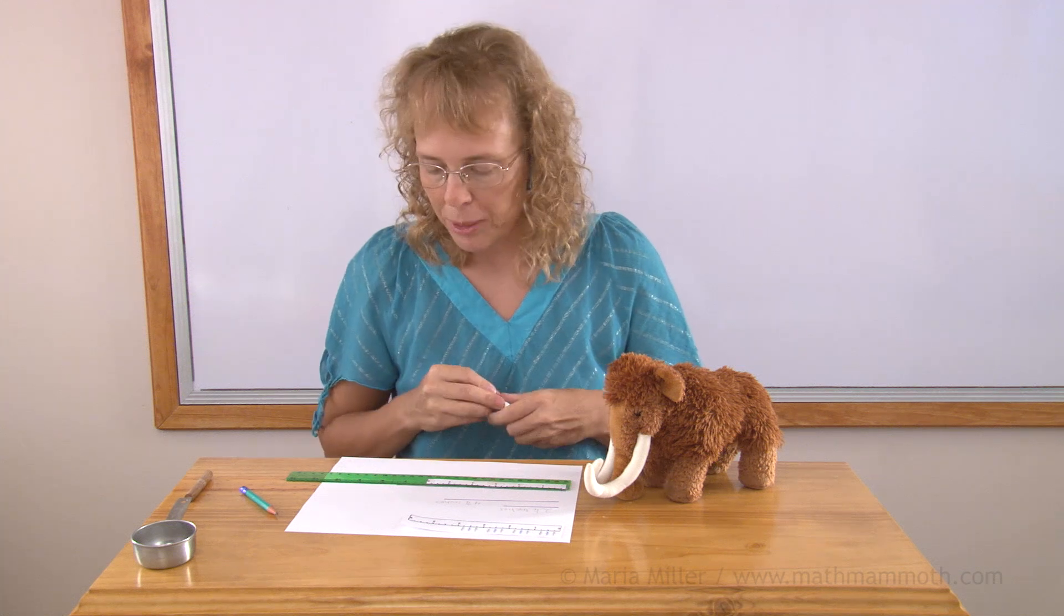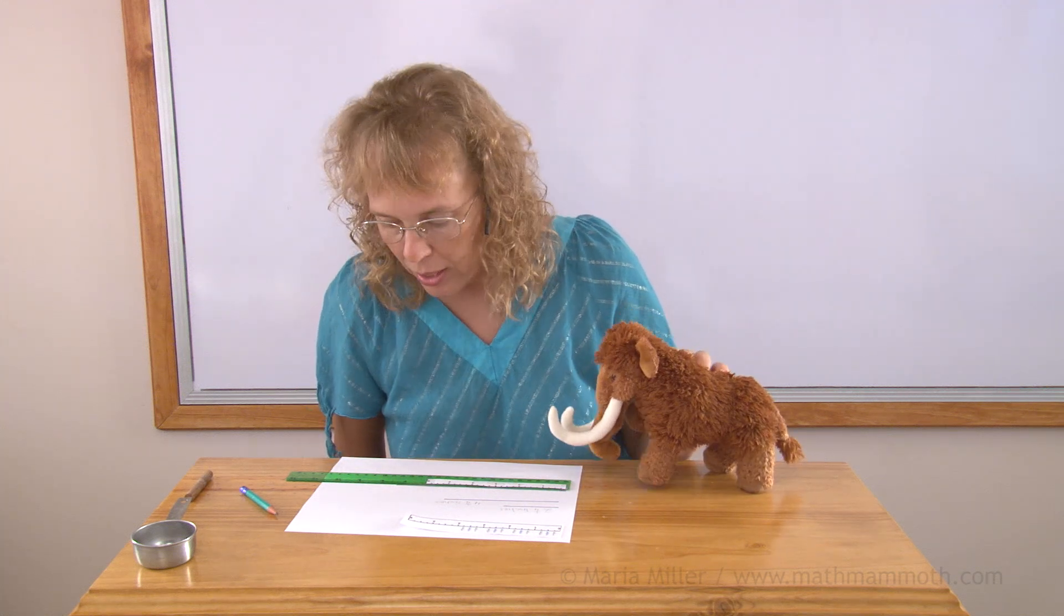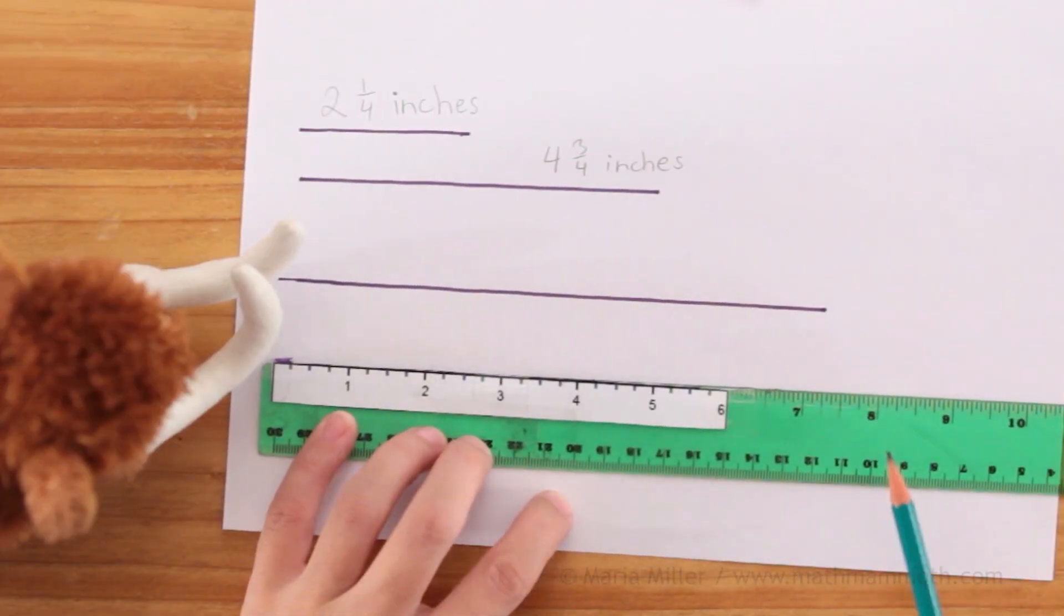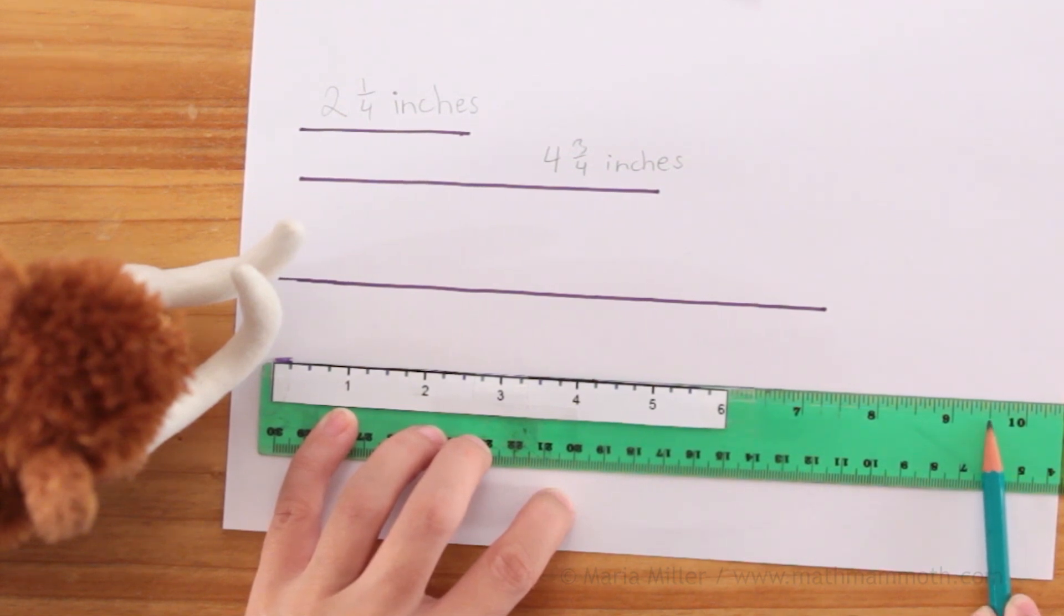Let's try another one. Nine and three-fourths. Okay. Again, let's look at it here. It's nine. It's ten. It's halfway between nine and ten. And then halfway between the half-inch and ten-inch mark, over there is nine and three-fourths.